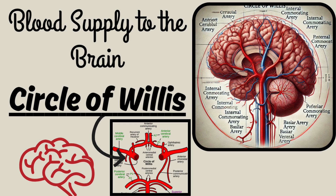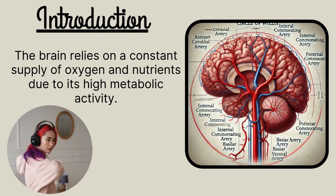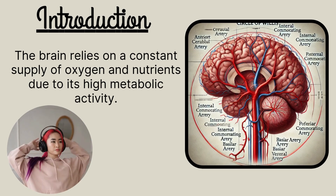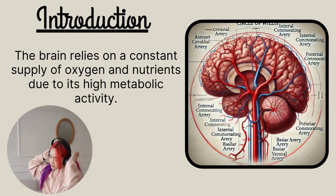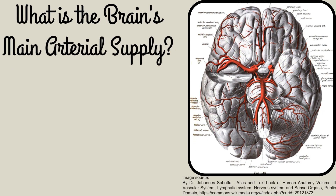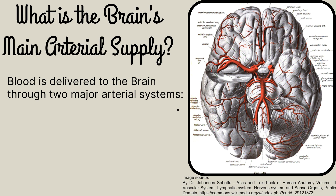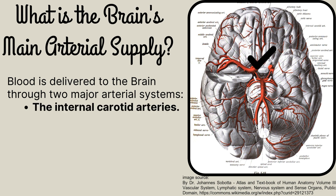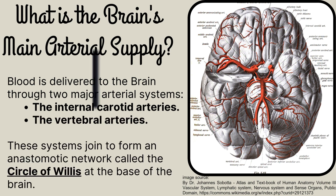In this video we will discuss the blood supply to the brain, also known as the Circle of Willis. The brain relies on a constant supply of oxygen and nutrients due to its high metabolic activity. Blood is delivered to the brain through two major arterial systems: the internal carotid arteries and the vertebral arteries. These systems join to form an anastomotic network called the Circle of Willis at the base of the brain.